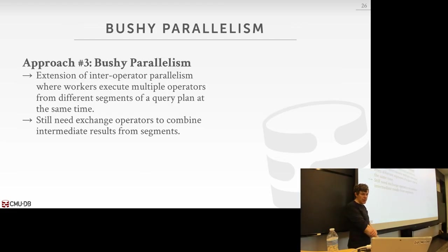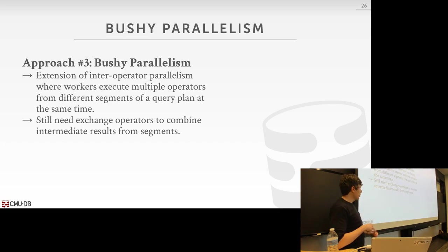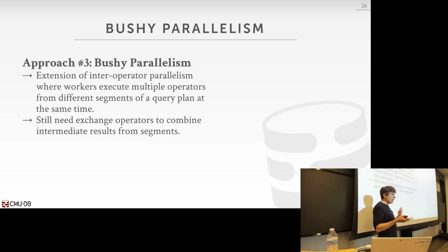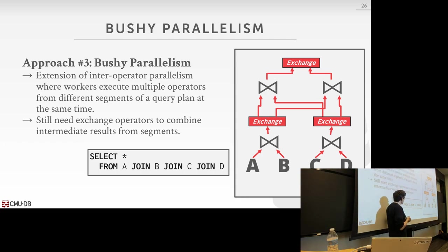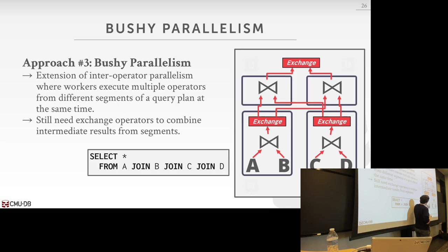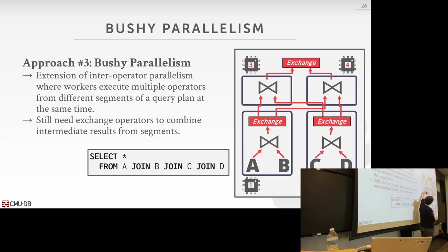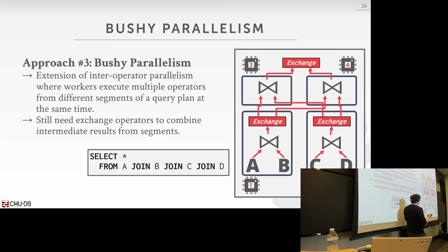Bushy parallelism is, in my view, just an extension of inter-operator parallelism. The idea is that different workers operate on different portions of the query plan tree simultaneously, still using exchange operators to move data between them. For example, in a four-way join on three tables, one fragment of the plan can execute on one worker while another portion executes on a different worker, both running in parallel and shoving data up into exchange operators above them.